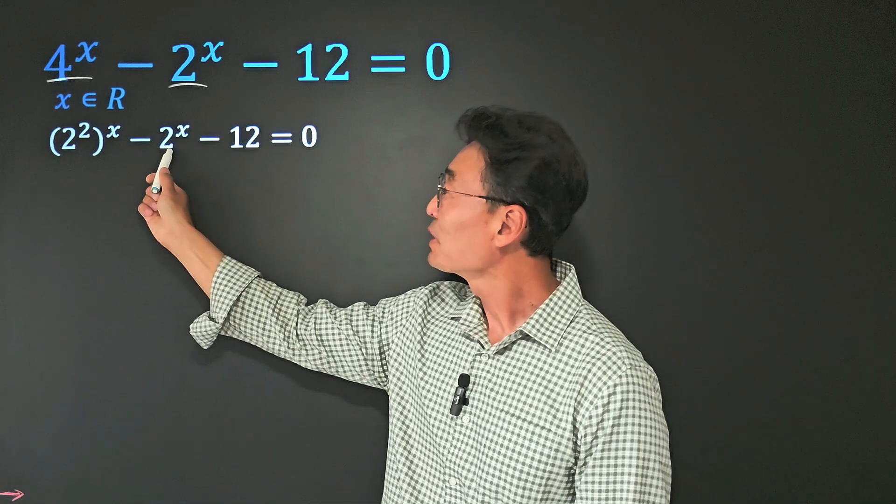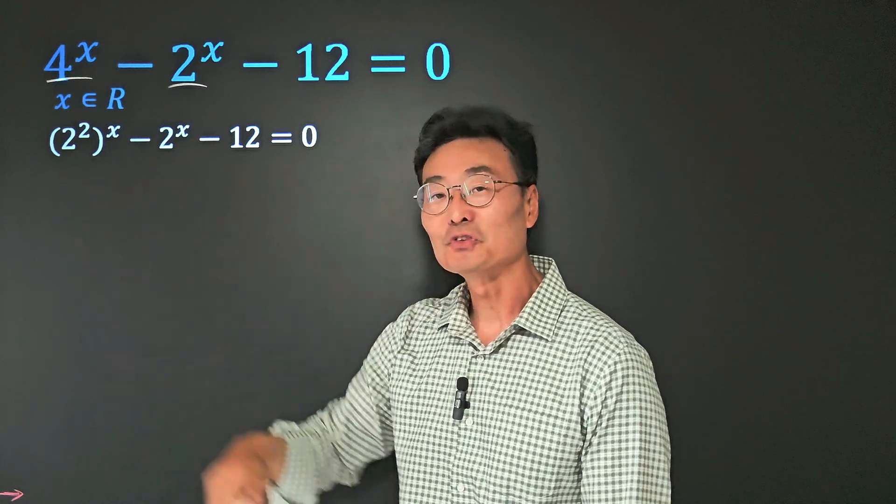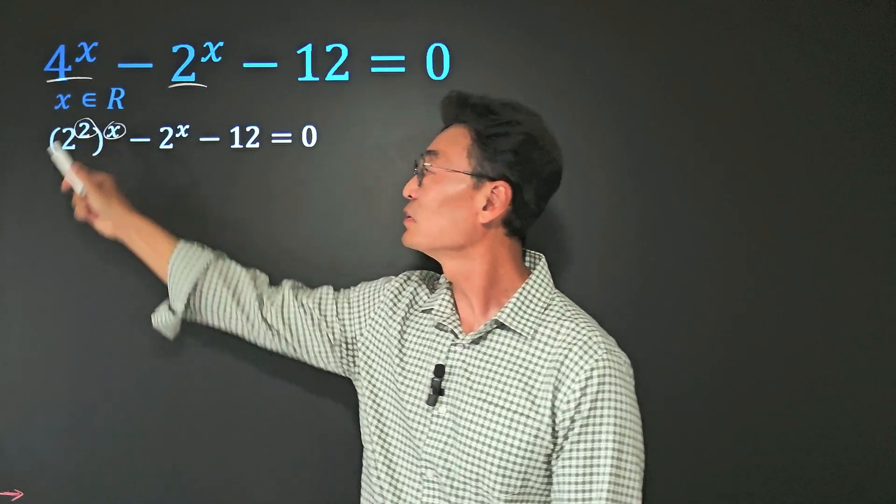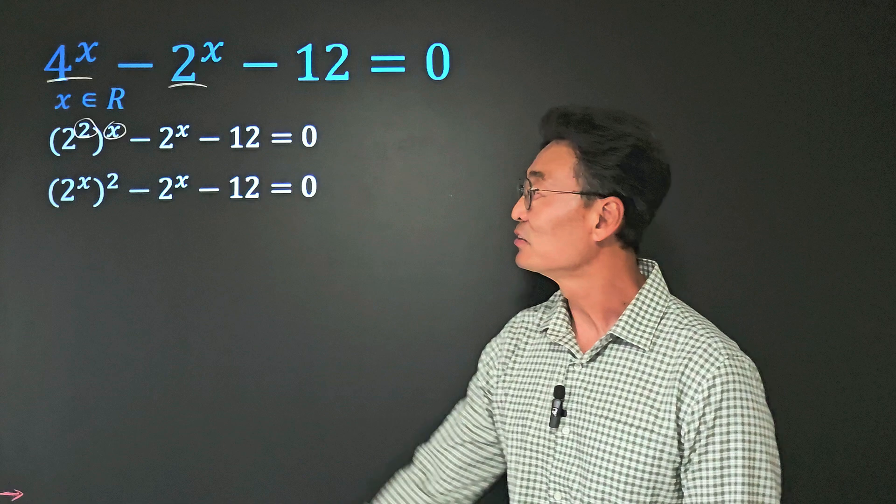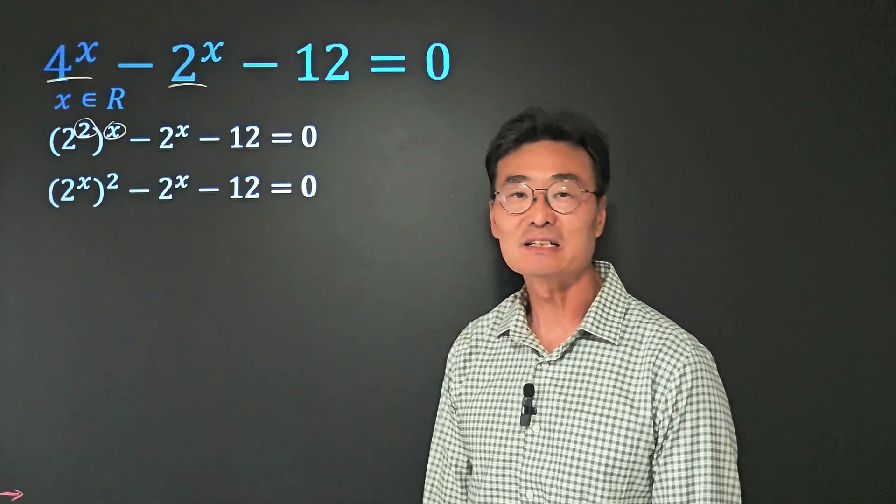Next, since we have 2^x here, we want to have 2^x here as well, so we'll go ahead and swap the 2 and the x and change it into (2^x)^2.